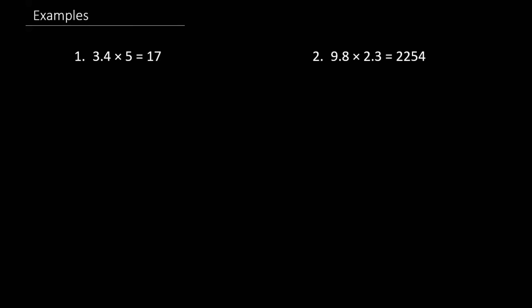The first example is 3.4 times 5 equals 17. I'll be showing you two methods, but I can't show you the second method for the first one, so I'll show you the second method for the second question. Our first method is estimation and then finding out where to put the decimal point. Basically what you do is multiply the whole numbers — the numbers before or to the left of the decimal point. So there's 3 and 5. 3 times 5 is 15, so our answer should be close to 15.